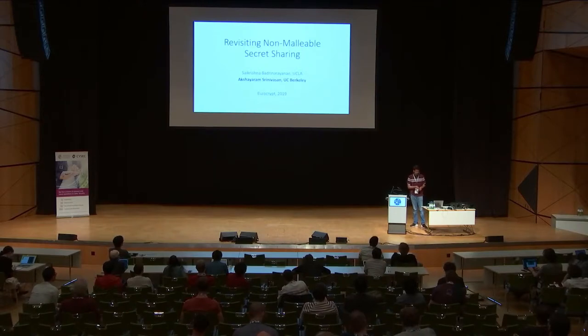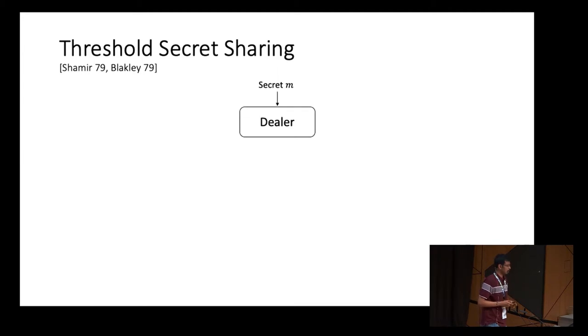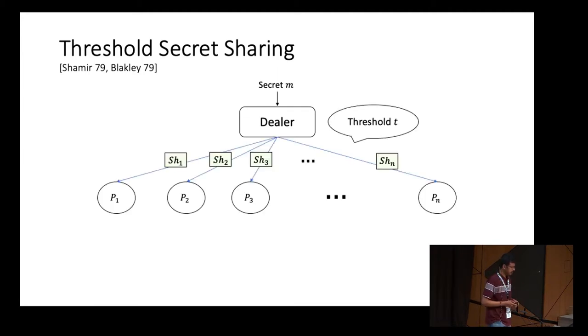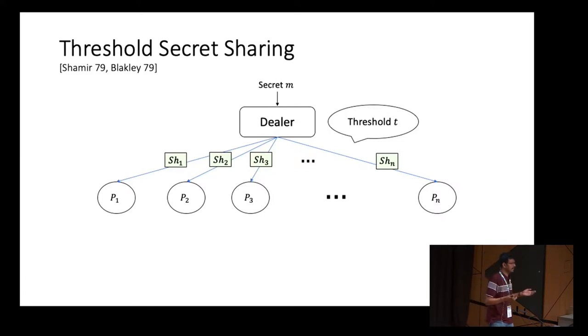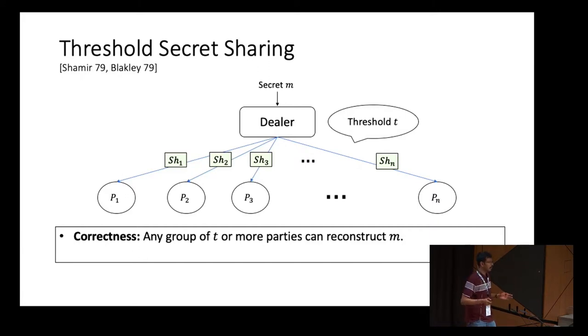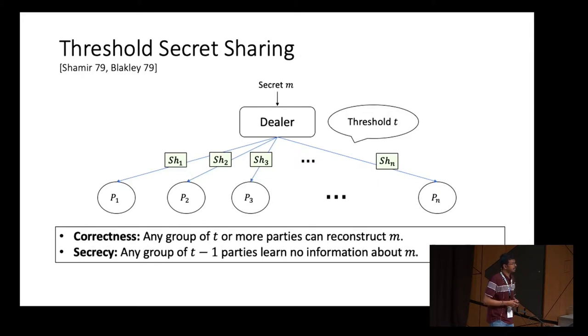Let me start this talk by giving you a brief overview of threshold secret sharing. Threshold secret sharing was introduced in the seminal works of Shamir and Blackley in the late 70s. A dealer has a secret message M and splits it into N shares SH1 to SHN with some threshold parameter T, sending the i-th share SHI to party PI. We require two properties: correctness, meaning any group of T or more parties can reconstruct M, and secrecy, meaning any group of T-1 parties learn no information about M.